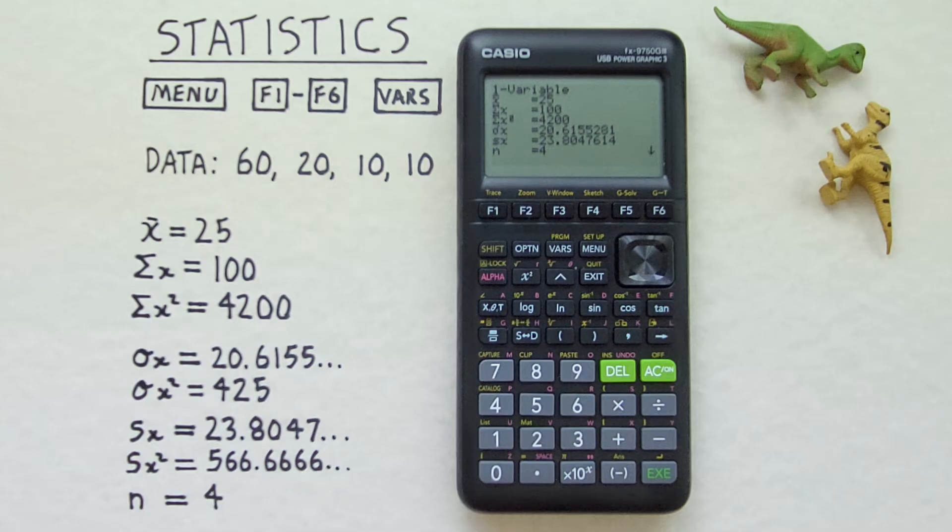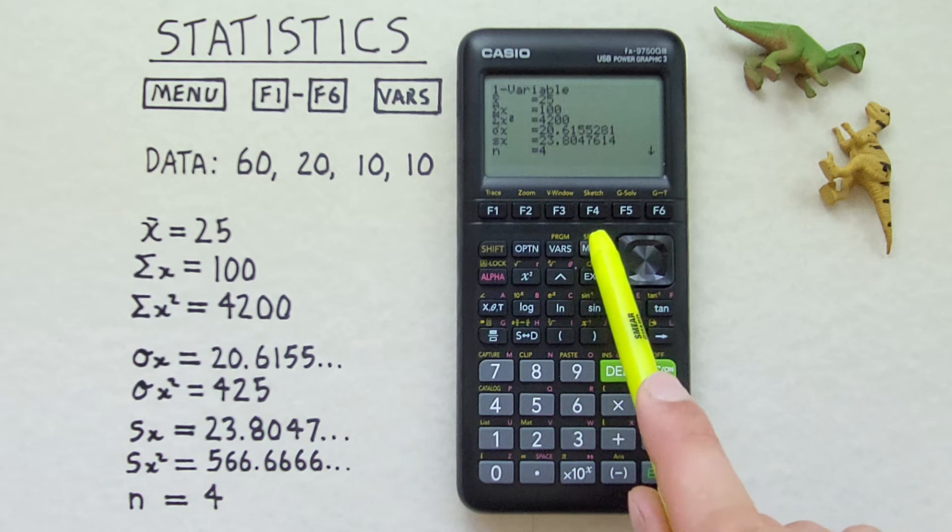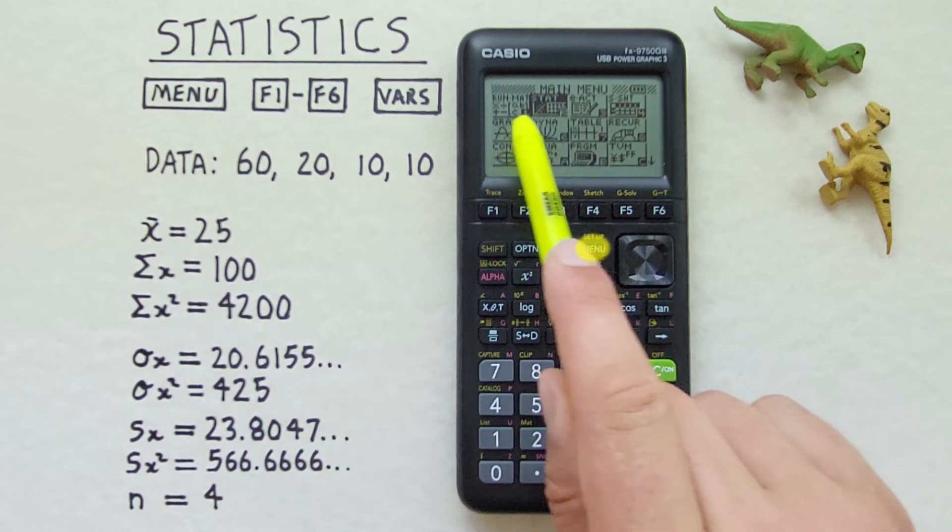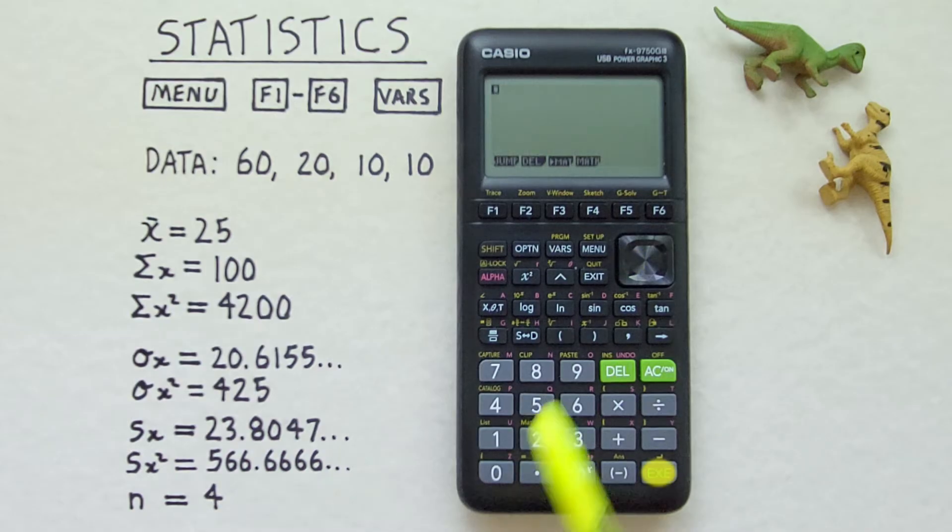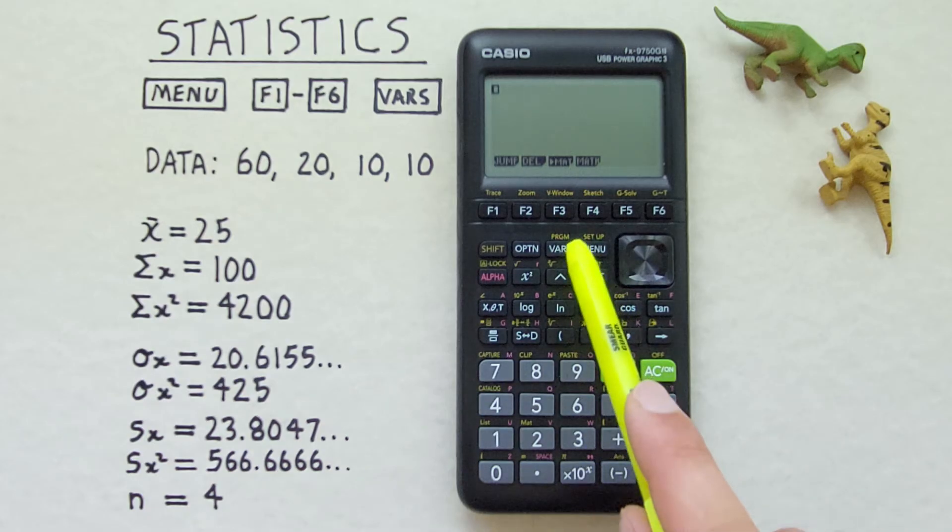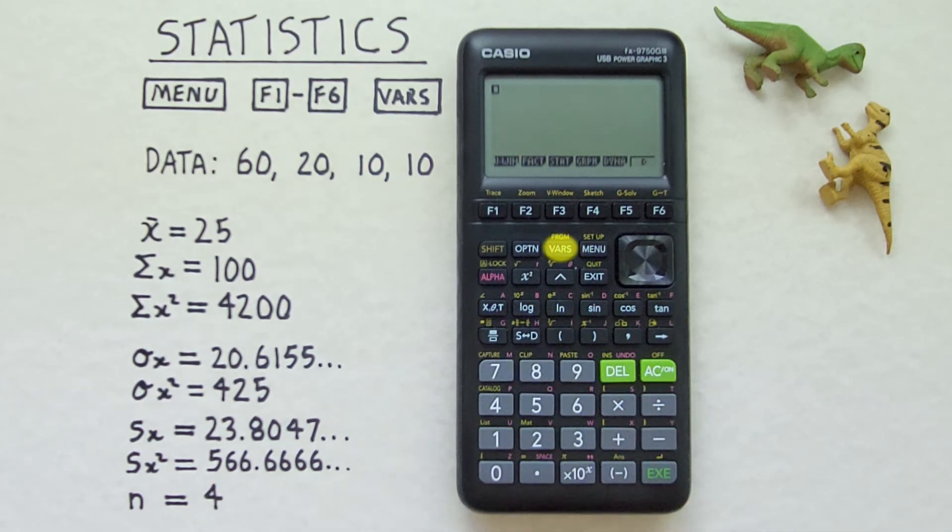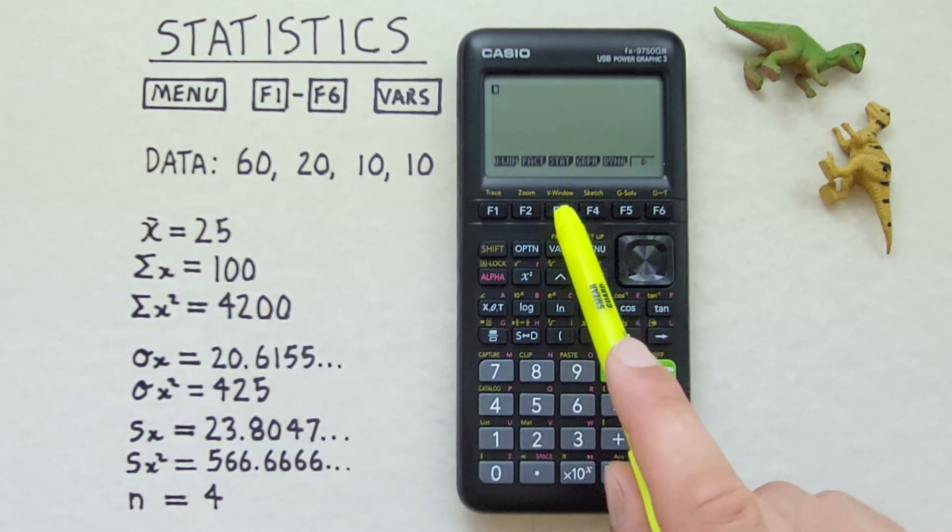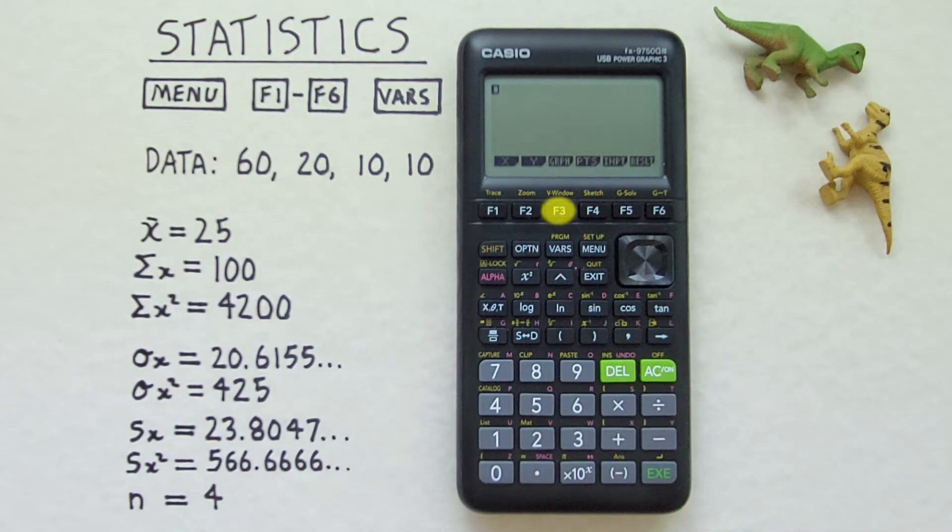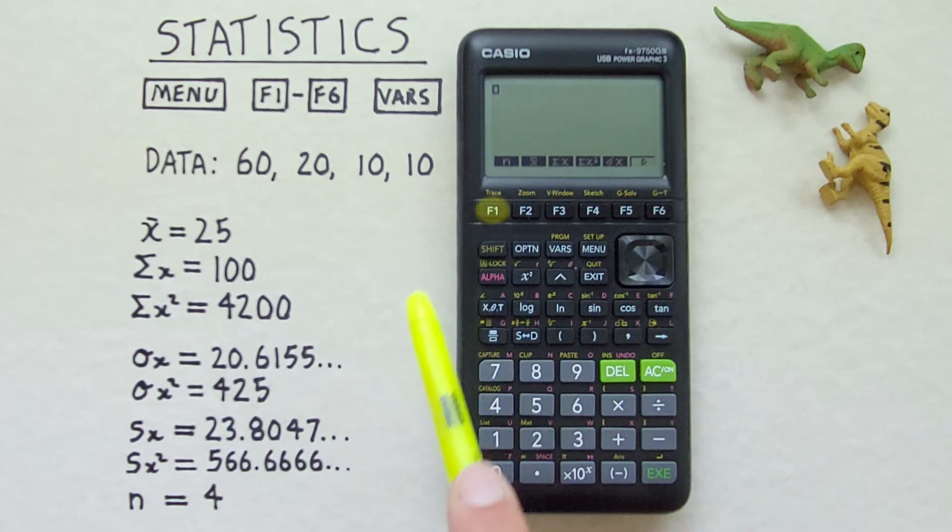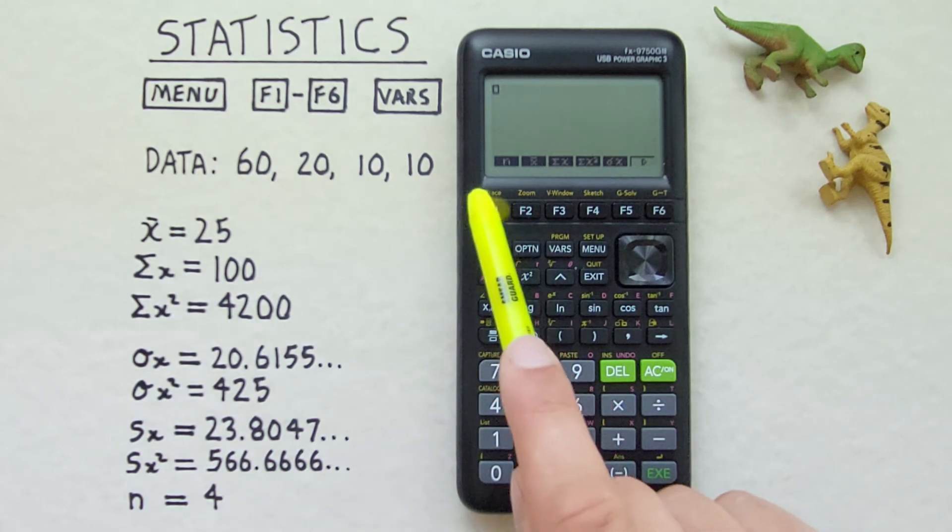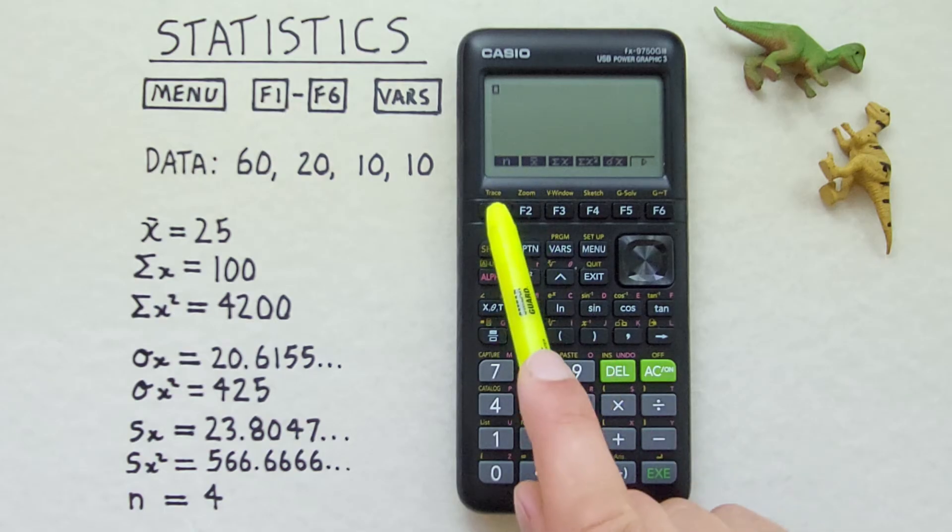But what if we want to find our variance or use our stats in other calculations? Well, if we go to menu and then run. Select that. Back to our main screen here. We can recall our variables by pressing the VARS key. And then choosing F3 for stat. And then from this menu we want to choose F1 for x. And there we go. We see our variables here.